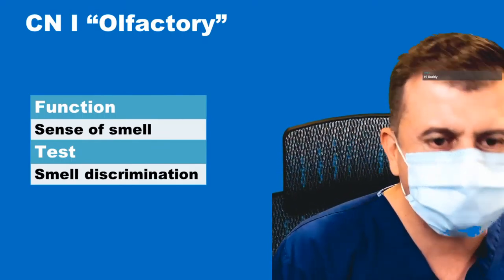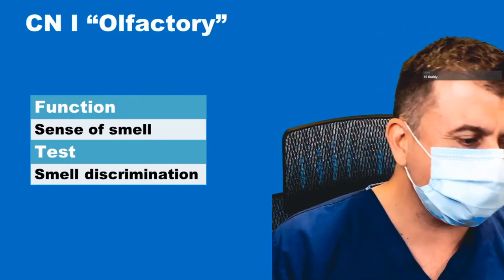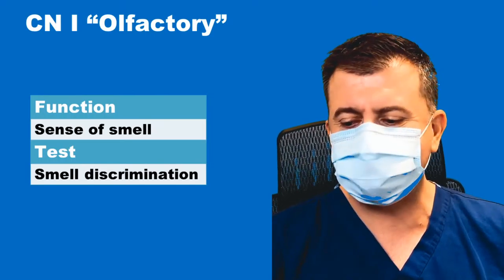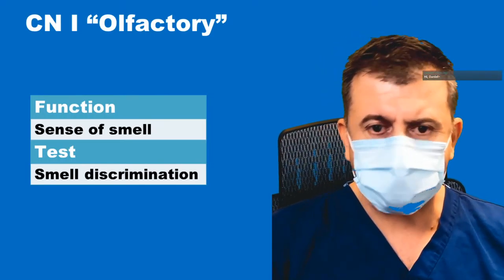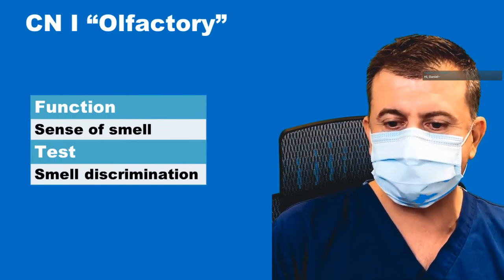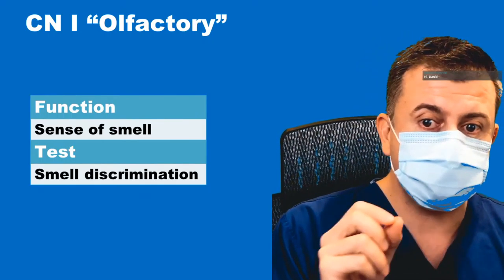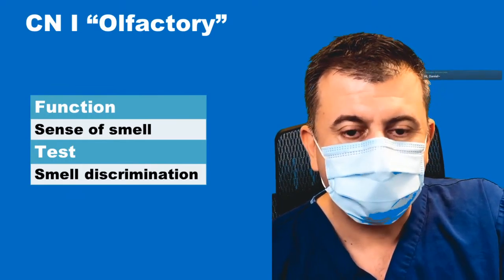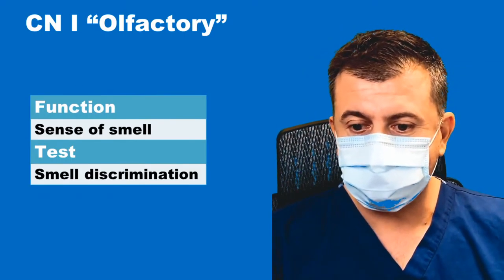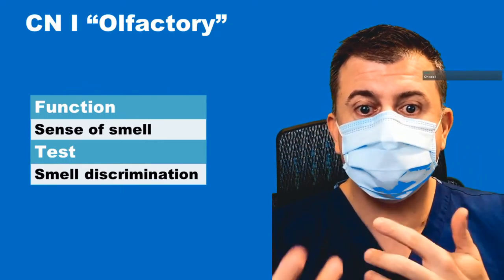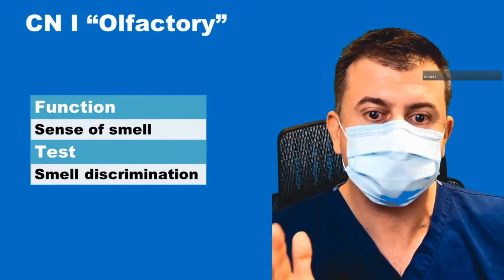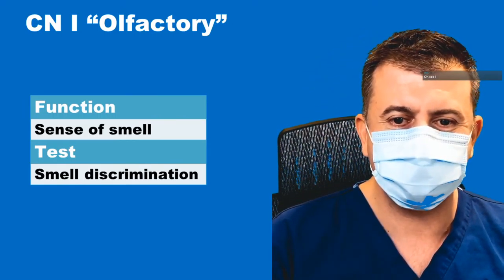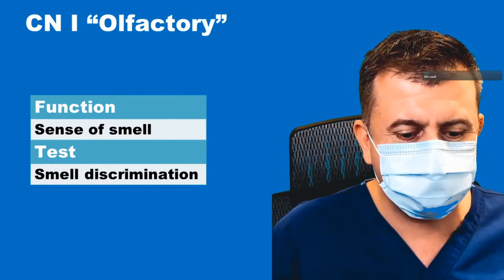Today we're talking about the cranial nerve exams. Cranial nerve number one is the olfactory nerve, and its function is mostly related to our sense of smell. The test we use for this is smell discrimination. For a long time we didn't use this very often, but now with COVID, anosmia is a serious symptom that sometimes appears in COVID patients. So people have started doing this test much more often. We're going to talk about how we do the exam of the olfactory nerve.